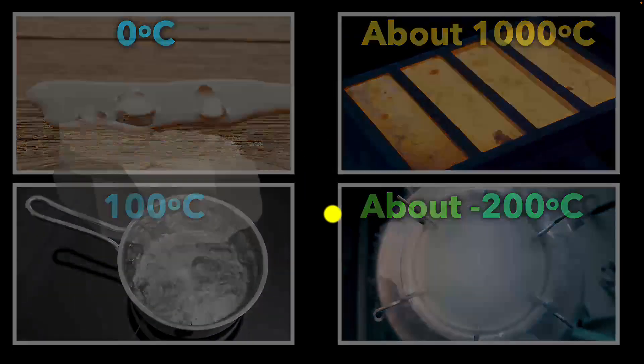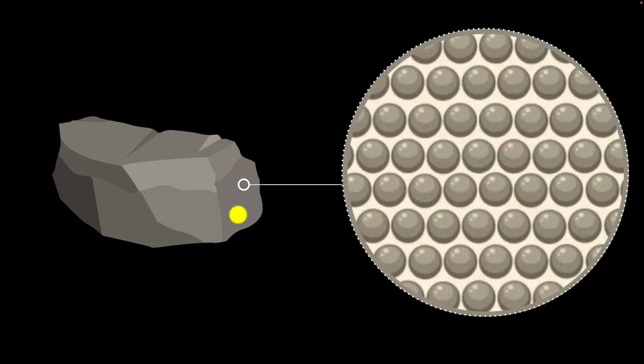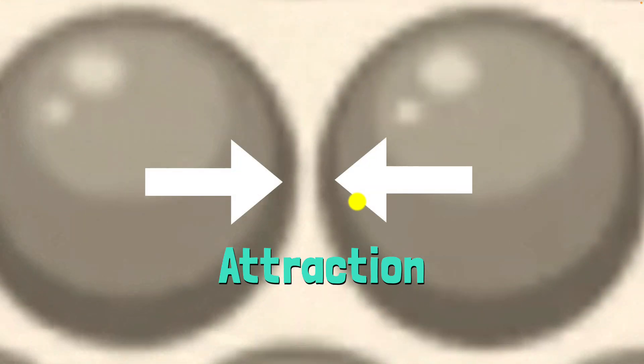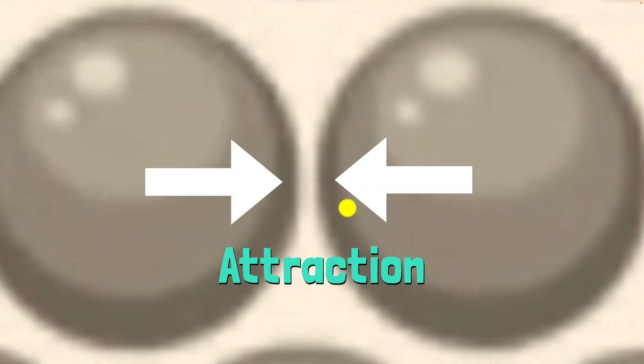To answer this question, we need to ask a much more fundamental question: what keeps stuff together? If you could zoom in and look at the molecular or the atomic level, we'll find that all these atoms and molecules are actually being attracted to each other.